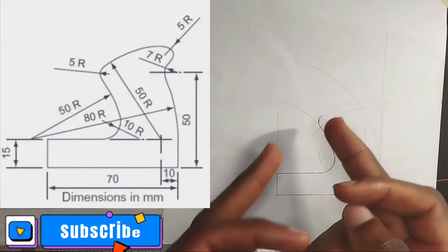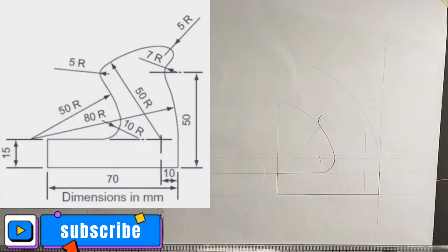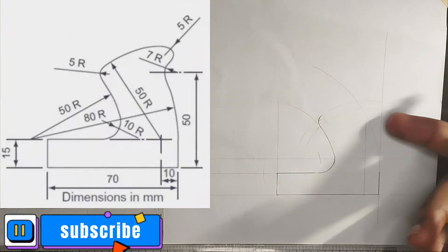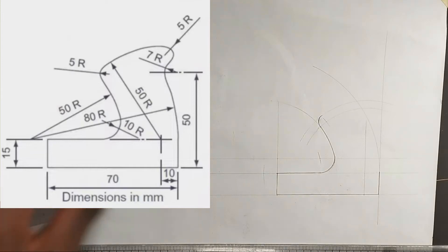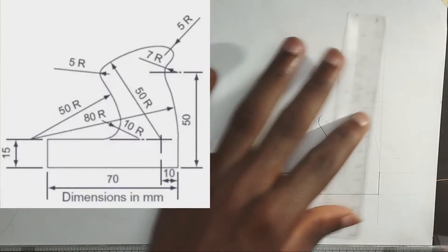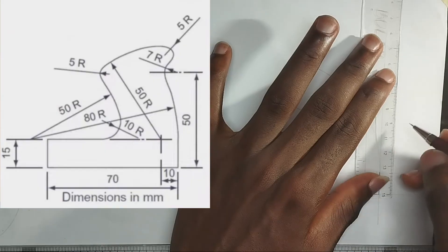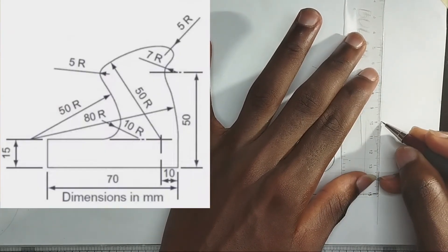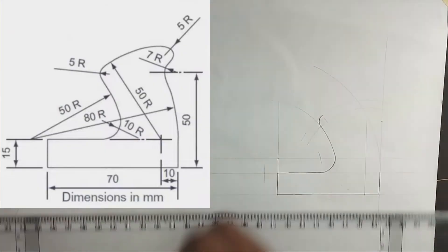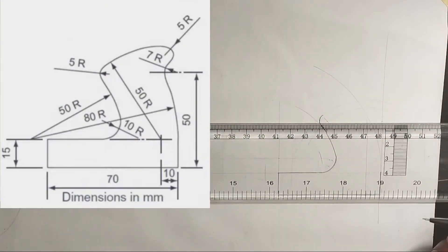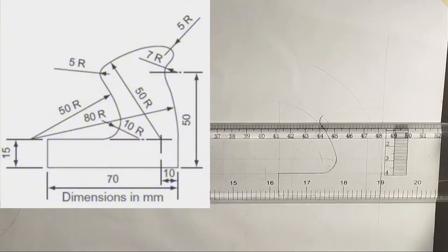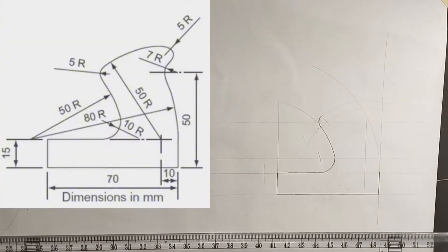So now, after taking this particular arc out, I'm going to pick — as shown in the diagram — a length of 50mm on my ruler, 50mm at this point. Then I'm going to use my T-square and draw a straight thin line like this.